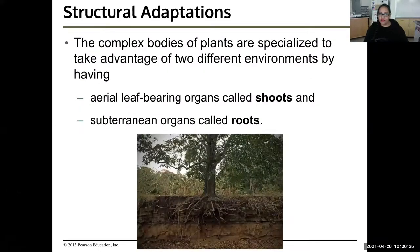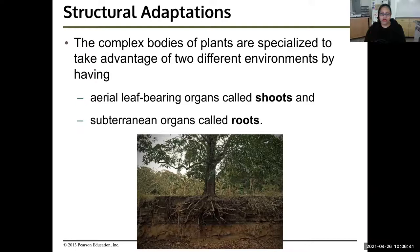Structural adaptations. The complex bodies of plants are specialized to take advantage of two different environments: the air and the ground. The aerial, leaf-bearing organs are called shoots — what we normally call leaves. And then subterranean, or underground, organs are called roots. So shoots and roots.